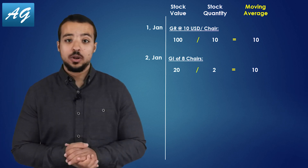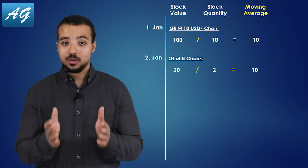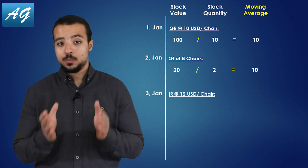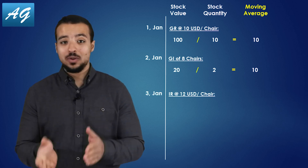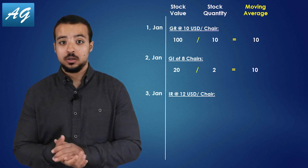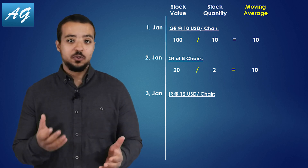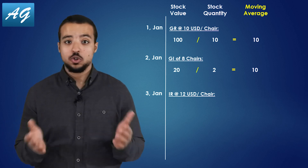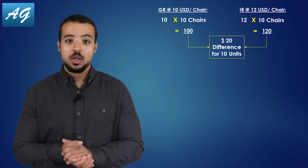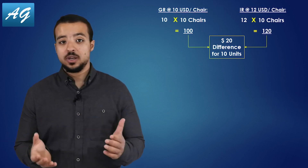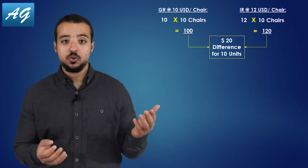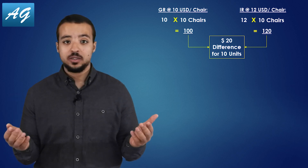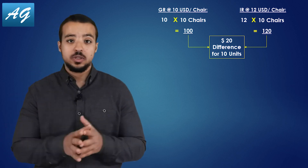On the 3rd of January, we received the invoice from the supplier for 10 shares, but the price is 12 USD per share instead of 10. As we agreed, the difference between the invoice receipt value and the goods receipt value should be posted to our stock account. The difference is 120 USD in invoice receipt minus 100 USD in goods receipt, so we have a difference of 20 USD.